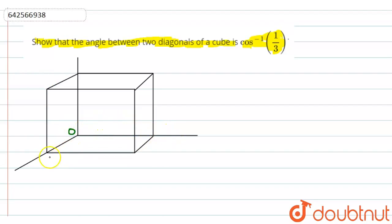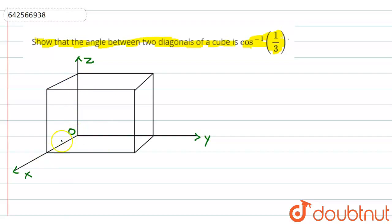Let the x-axis, y-axis, and z-axis be set up as shown. Let the side of each edge be a. So at the origin point, I will have the vertex at coordinates 0, 0, 0.